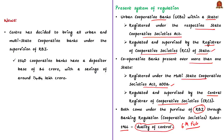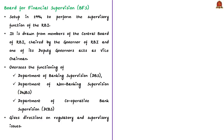Today's news is that the Union Cabinet has approved an ordinance to bring about 1,500 urban cooperatives and multi-state cooperative banks under RBI regulation. In this context, let us know about the Board for Financial Supervision of the Reserve Bank of India. Financial supervision is an important function of the Reserve Bank of India. Without effective supervision, the financial system may face crisis. The Board for Financial Supervision was set up in 1994 in order to perform the supervisory function of the Reserve Bank of India.